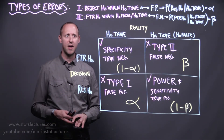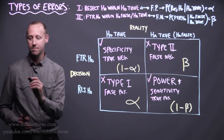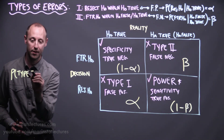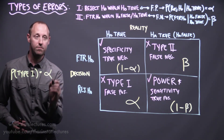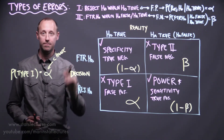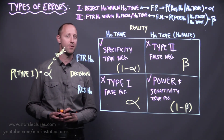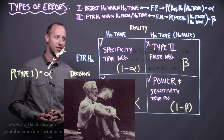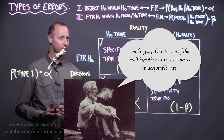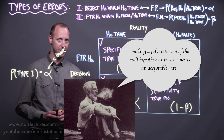The probability of making a Type 1 error is denoted with alpha, and importantly, this is something we choose. We choose our Type 1 error rate. Often we use an alpha of 5%. This came from Ronald Fisher throwing out a suggestion that making a false positive — a false rejection of a null — 1 in 20 times was an acceptable rate. It's 5%, that number stuck. It's arbitrary, but a reasonable value.